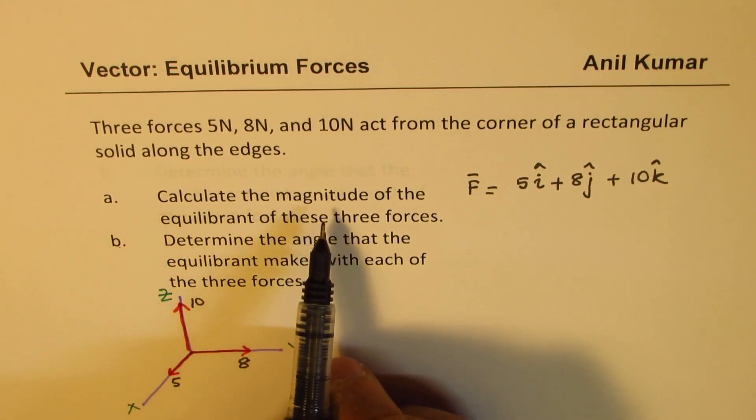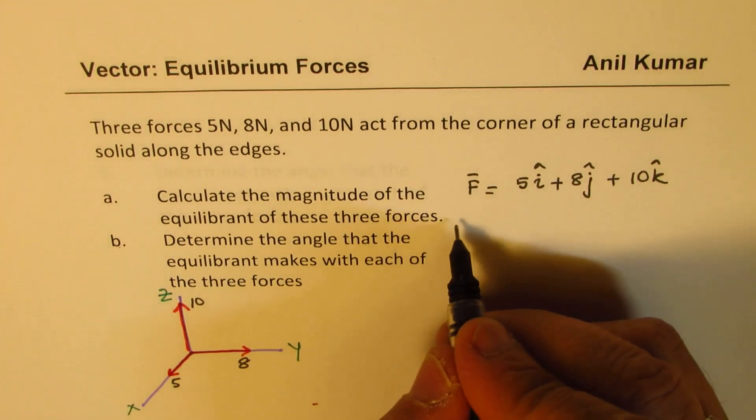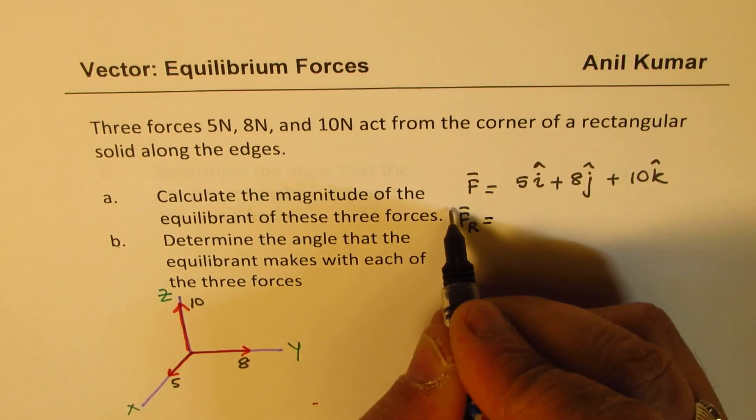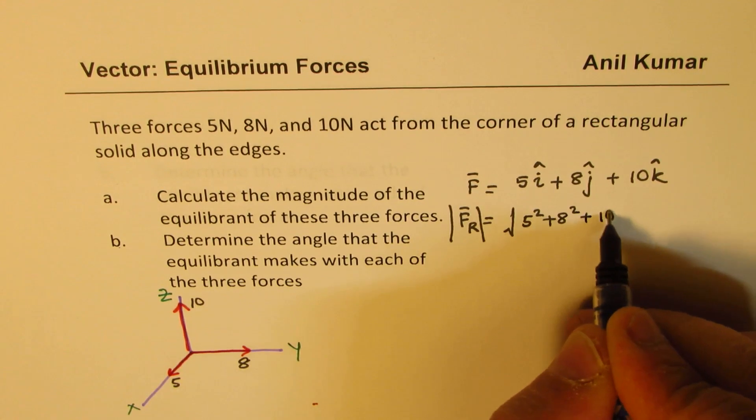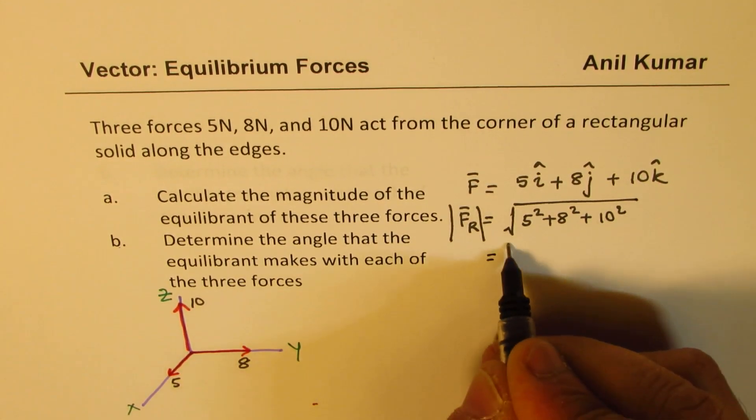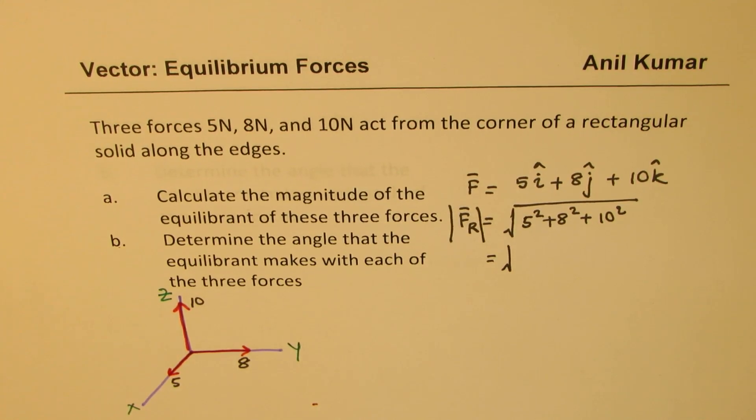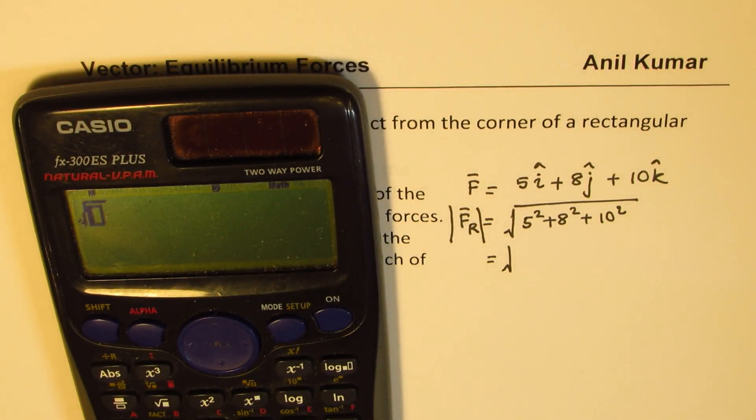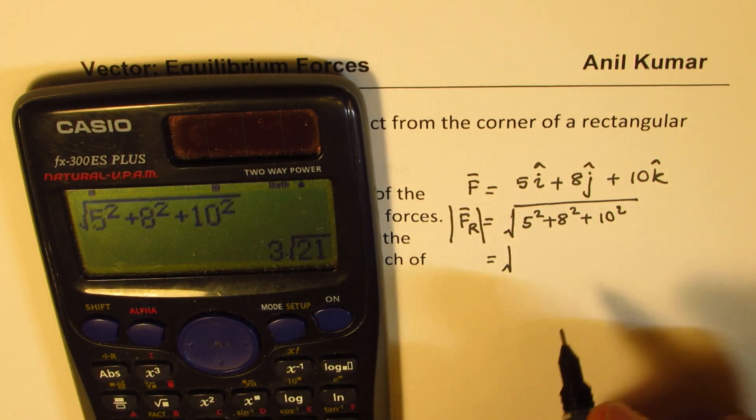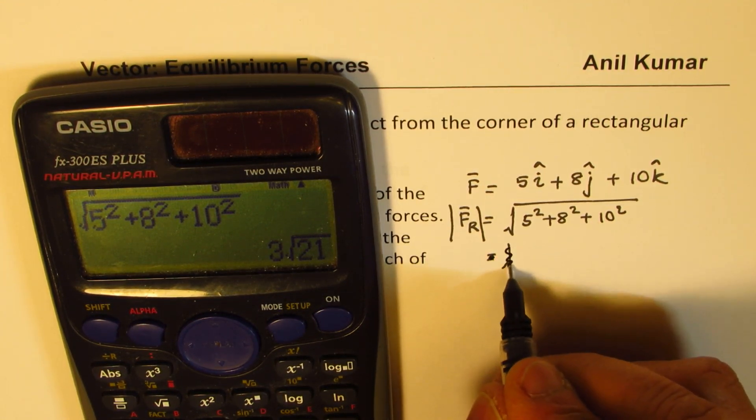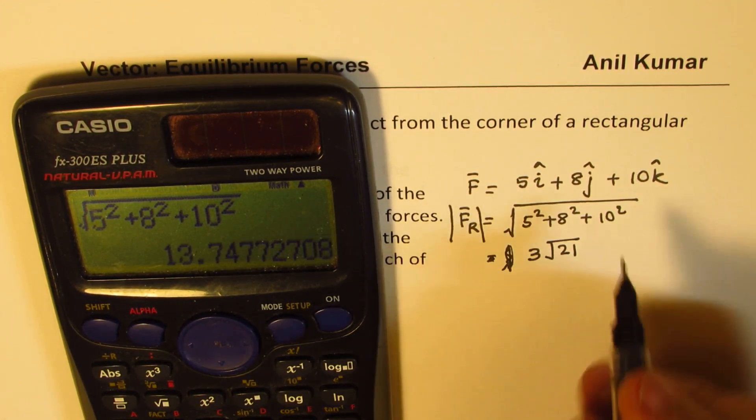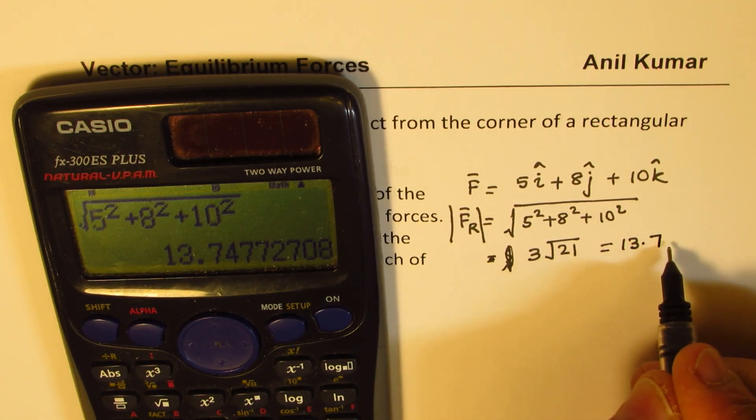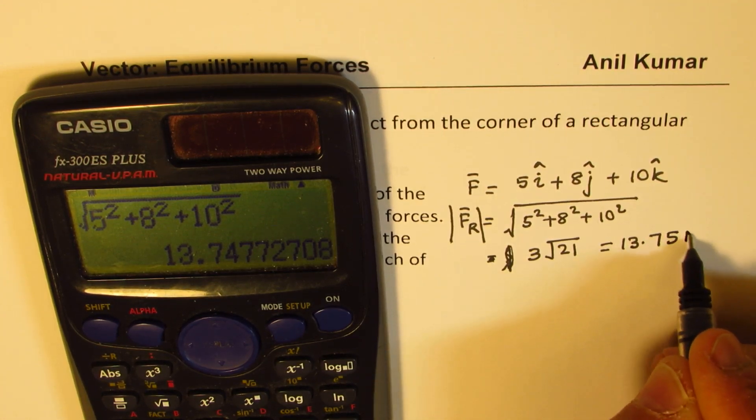Now when we calculate the magnitude of equilibrant, let's find the magnitude of resultant first. So the resultant magnitude is going to be square root of 5 square plus 8 square plus 10 square. So that gives you 3 square root 21. In decimals it is equal to 13.75 newtons.